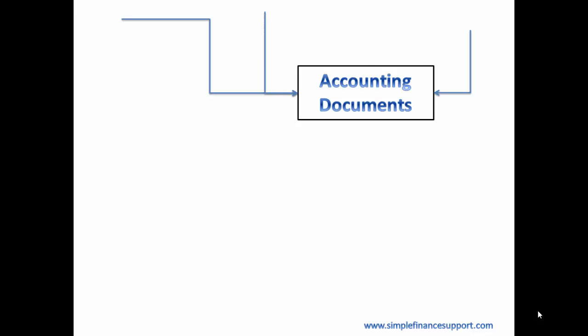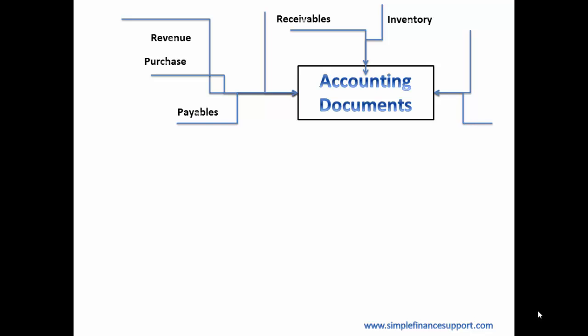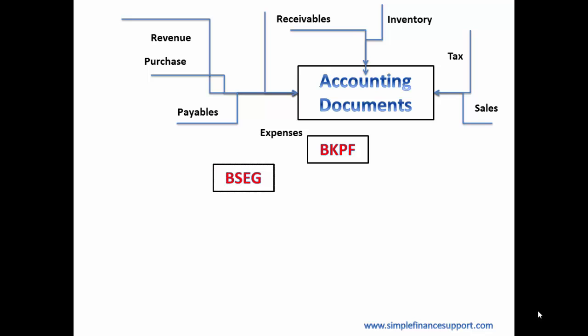taxes, accounts receivables, accounts payables, and fixed assets, and other business processes. Pretty much all business processes posting into accounting from their respective modules. Whenever accounting documents are posted, technically these are recorded into a header table BKPF and a line item table BSEG.